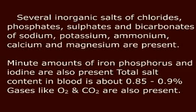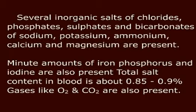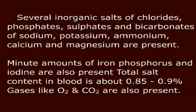Inorganic Components of Blood Plasma. Several inorganic salts like chlorides, phosphates, sulfates and bicarbonates of sodium, potassium, ammonium, calcium and magnesium are present. Minute amounts of iron, phosphorus and iodine are also present. Total salt content of blood is about 0.85 to 0.9%. Gases like oxygen and carbon dioxide are also present.